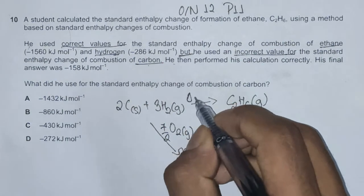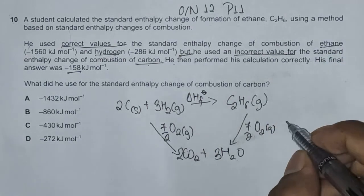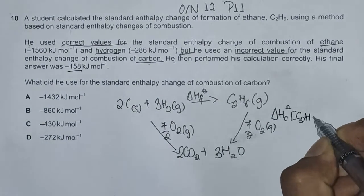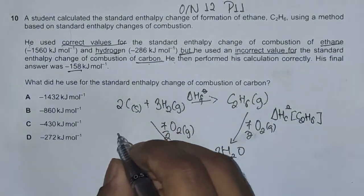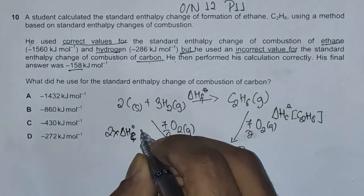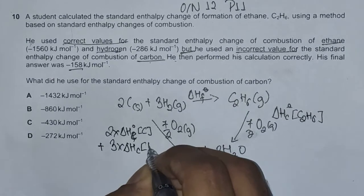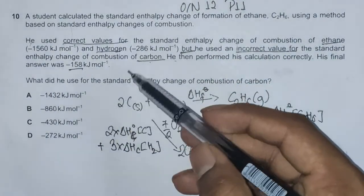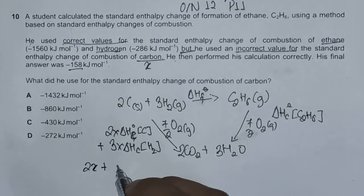This arrow represents the enthalpy change of formation. This arrow represents the enthalpy change of combustion of ethane, ΔHc(C2H6). And this represents 2 times ΔHc(C) plus 3 times ΔHc(H₂). We haven't been given the value used for the enthalpy change of combustion of carbon, so let's call it X. This gives us 2X plus 3 times ΔHc(H₂).